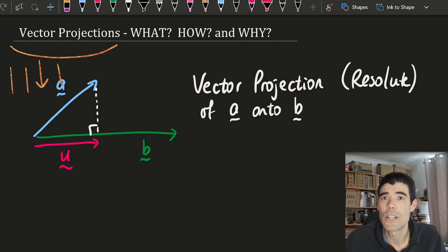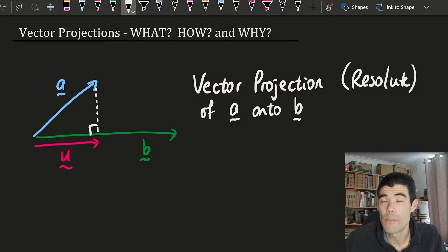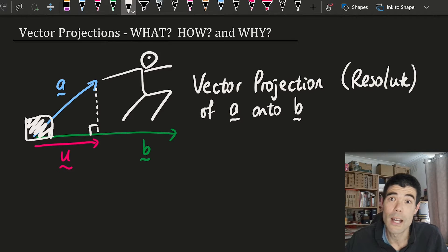Another way to think about it or another application is imagine a is a force vector. We've got a heavy object on the ground. We're pulling up at a diagonal to the ground, but we can't pull the heavy object off the ground.